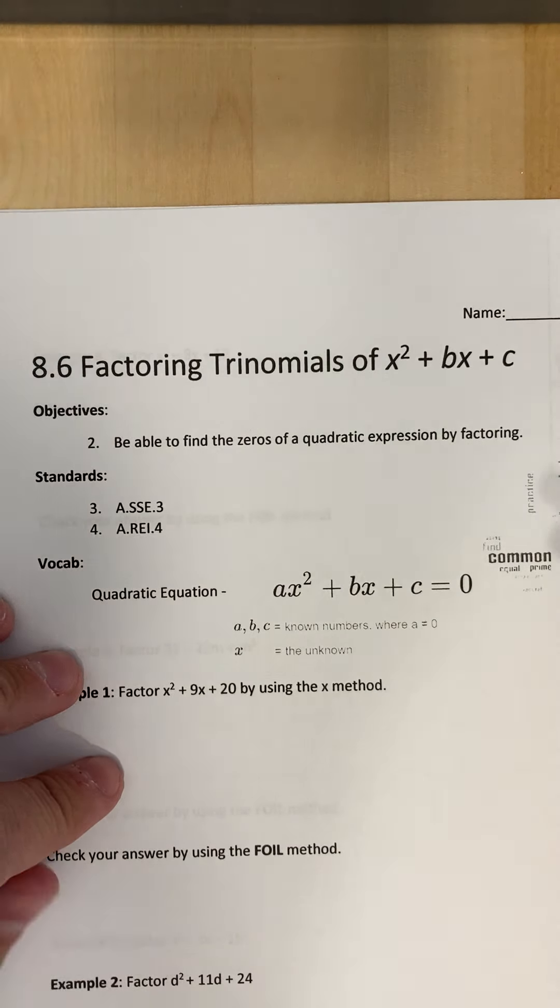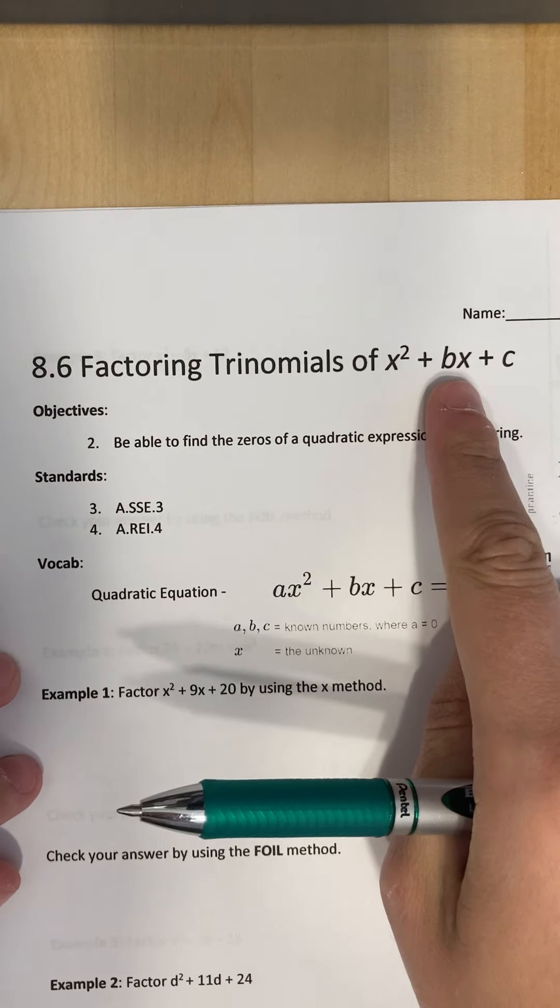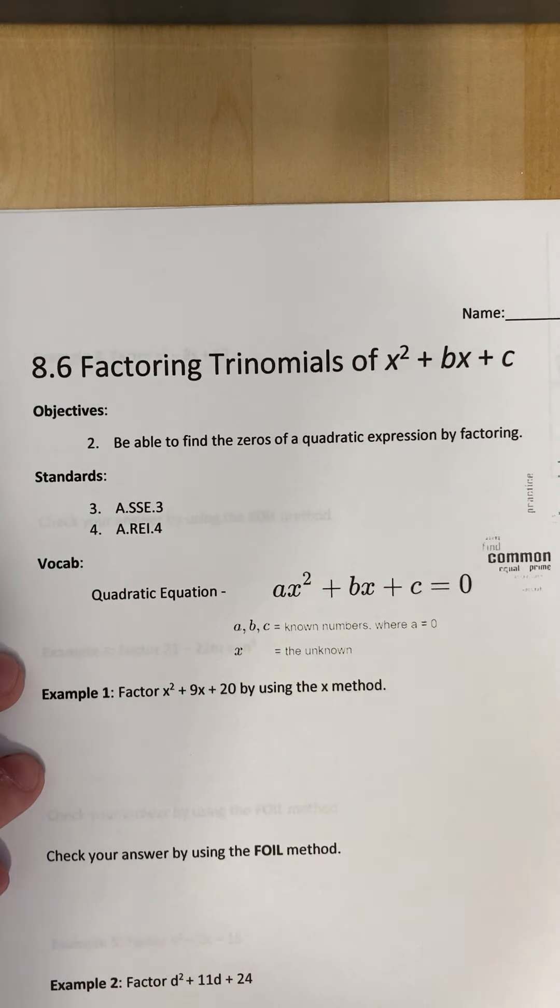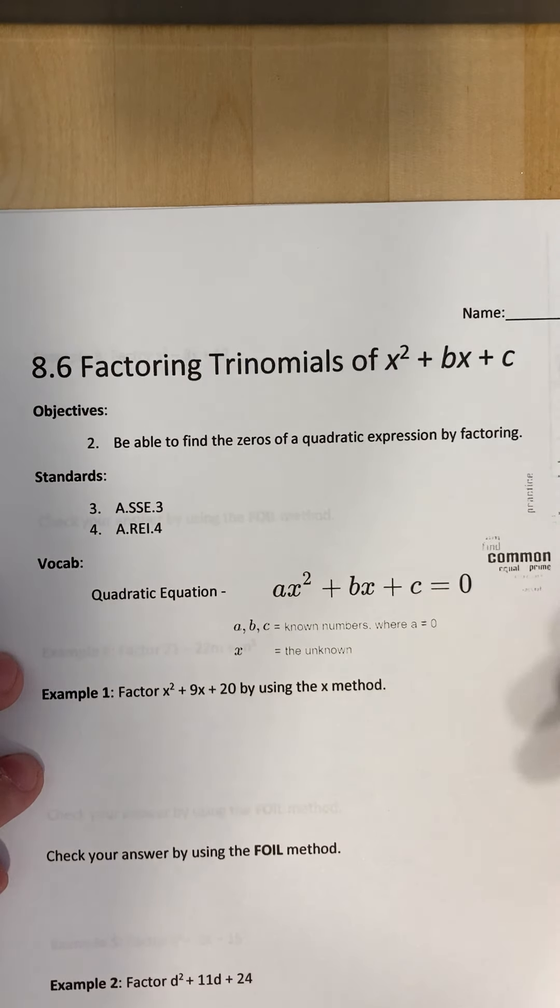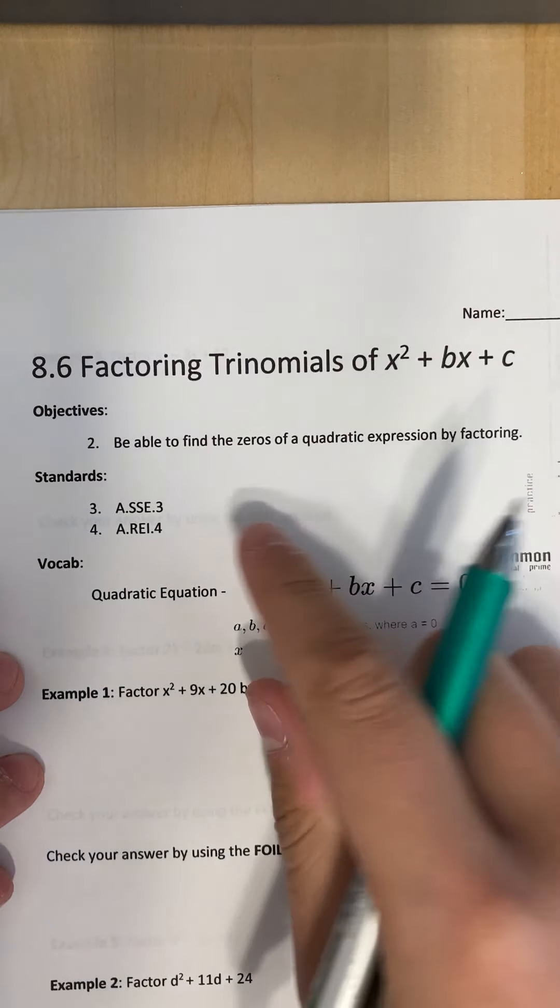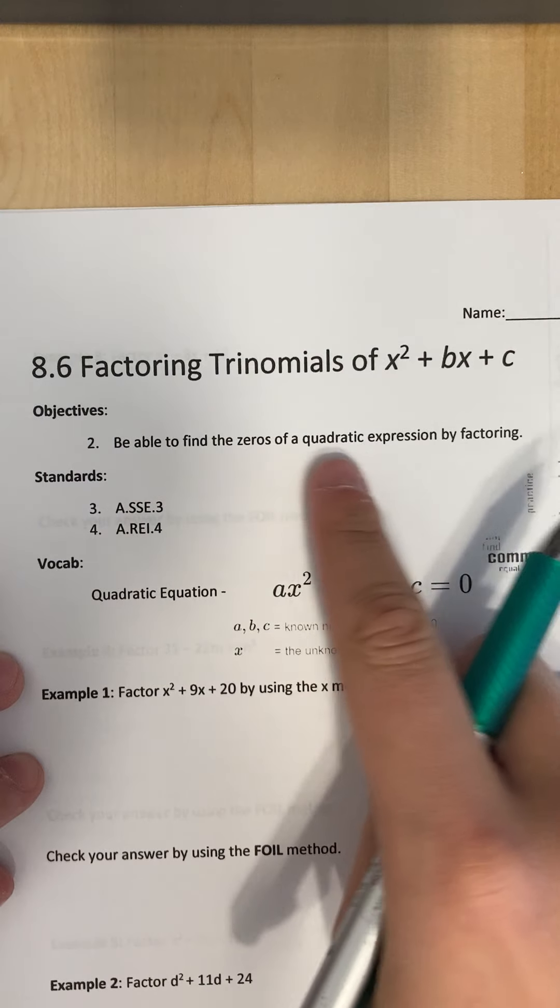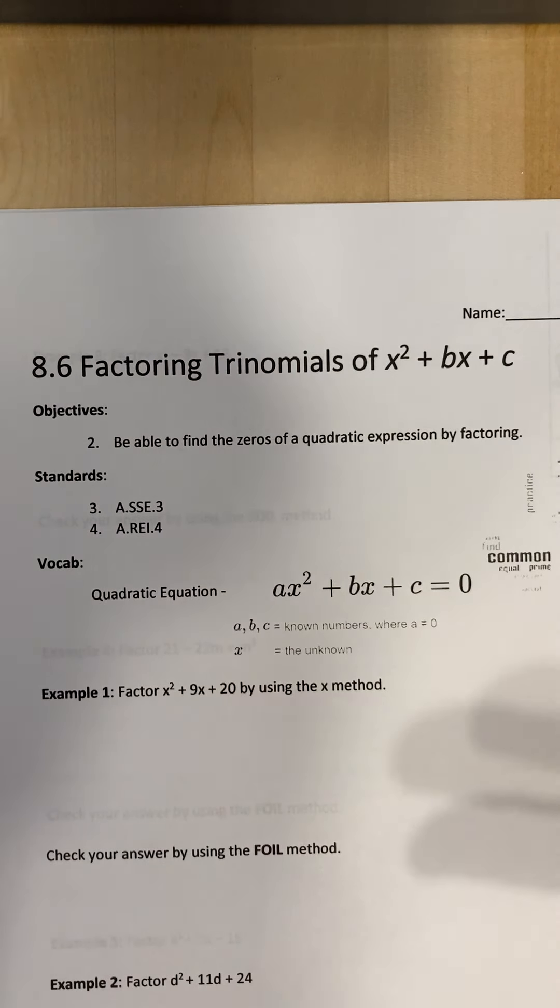All right, this one's going to be the big one for the week. This is factoring trinomials of x squared plus bx plus c. So we want to be able to find the zeros of the quadratic expression by factoring. Today, we aren't going to be finding the zeros. We're just going to be factoring it, kind of like simplifying it. We're just going to be writing it in a different way.